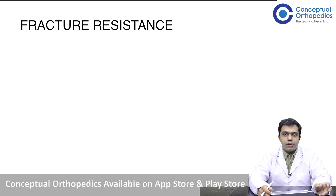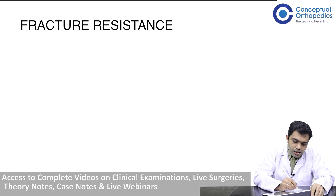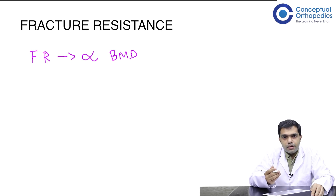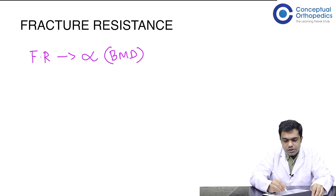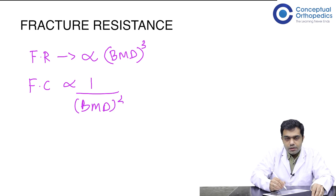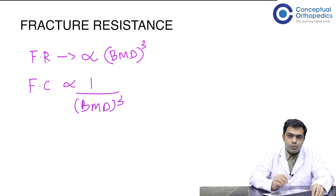The amount of osteoporosis is indicated by the bone mineral density, also known as BMD. Fracture resistance is directly proportional to the bone mineral density. The amount of bone mass is important so that normal loads should not cause a fracture. In fact, fracture resistance is directly proportional to the cube of BMD. So the chances of a fracture happening are inversely proportional to the cube of BMD — even a small reduction in BMD can cause fracture risk to increase almost nine times.